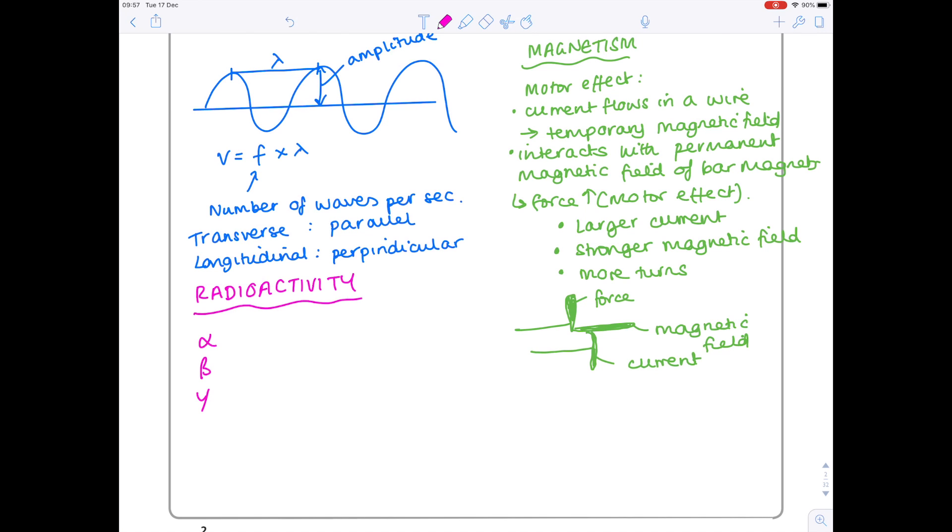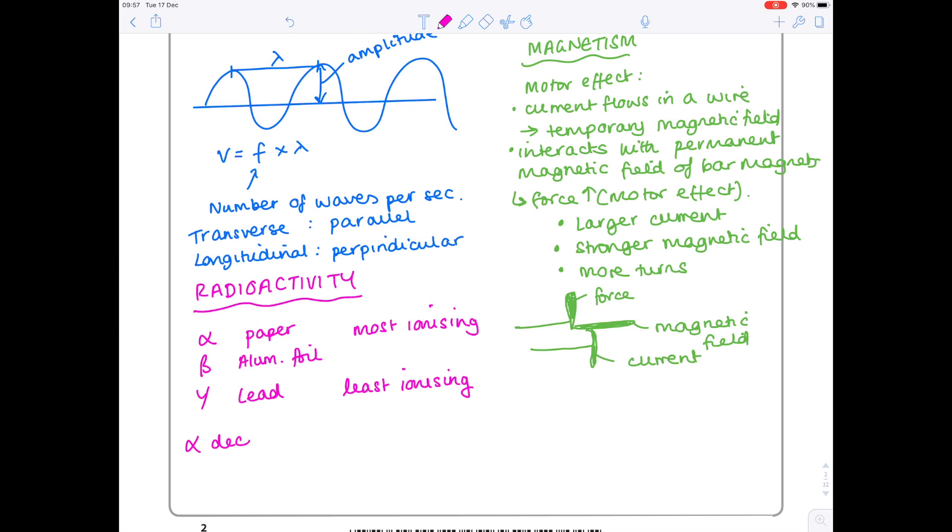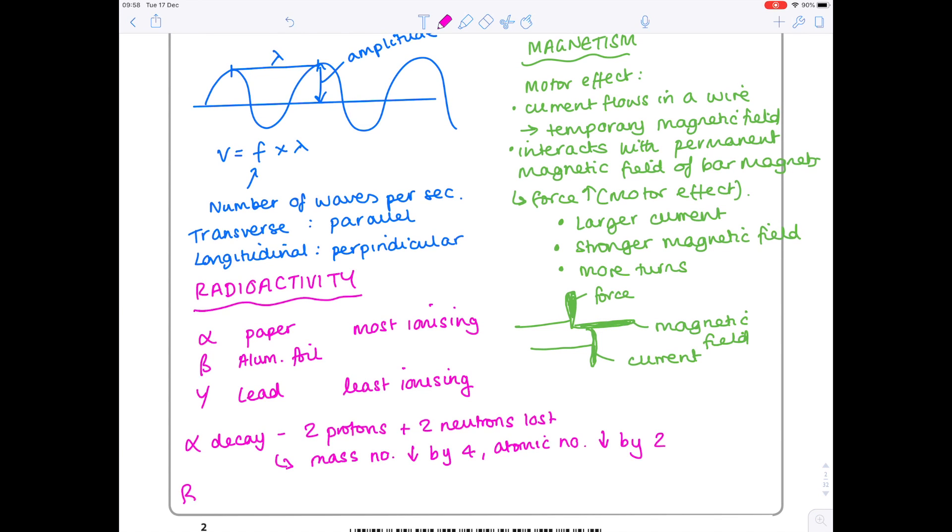I might choose my notes to go over some radioactivity. Alpha, beta, and gamma - what are they stopped by? Alpha stopped by paper, beta stopped by aluminum foil, gamma stopped by lead sheeting. Which is most ionizing? That's alpha. Which is least ionizing? That's lead. When alpha decay occurs, two protons and two neutrons are lost, so mass number decreases by four and atomic number decreases by two. With beta decay, a neutron turns into a proton, so mass number is unchanged and atomic number increases by one.